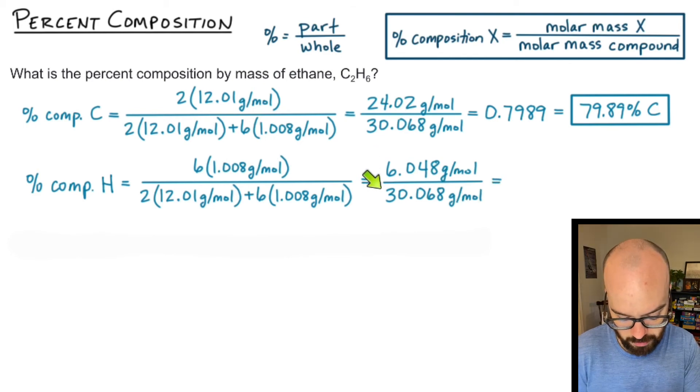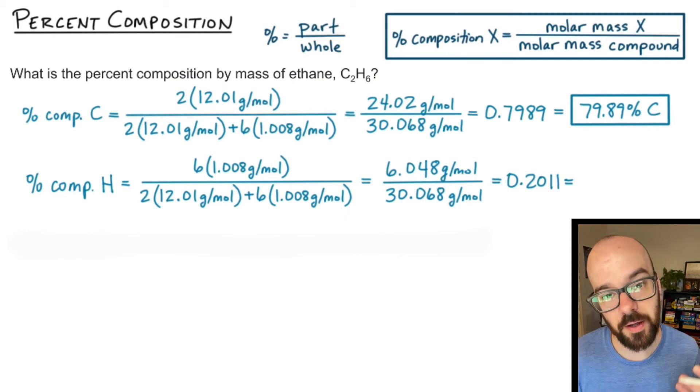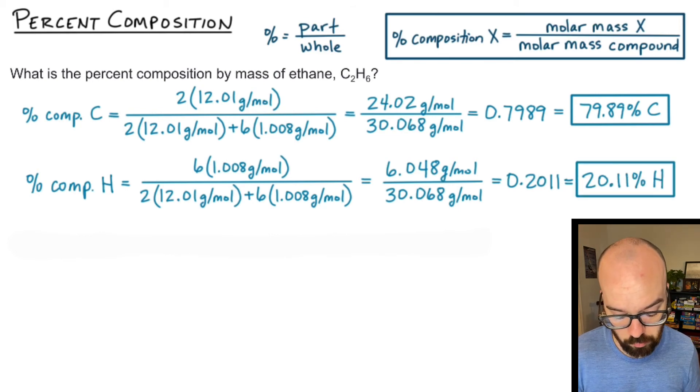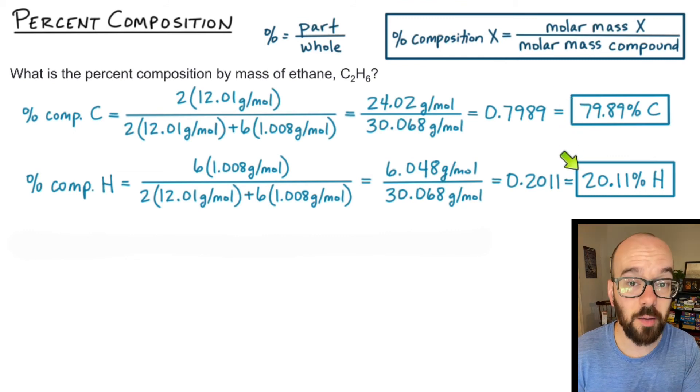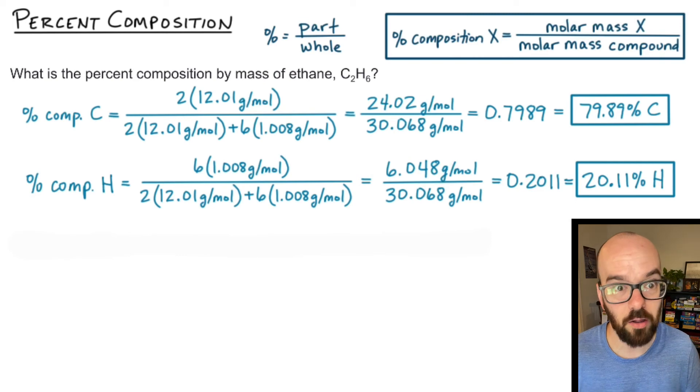So 6.048 divided by 30.068, and I'm going to get 0.2011, and again that's a decimal. I'm going to multiply that by 100% to find the percentage and I get 20.11% hydrogen. Now you may notice something right away. If I were to add up these two numbers, the percent composition of carbon and the percent composition of hydrogen, they would add up to 100%, because if you add up the percentages of each element in the compound it should equal all the compound or 100% of the compound.